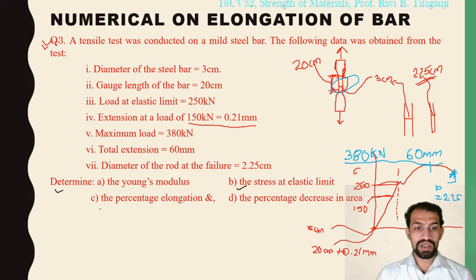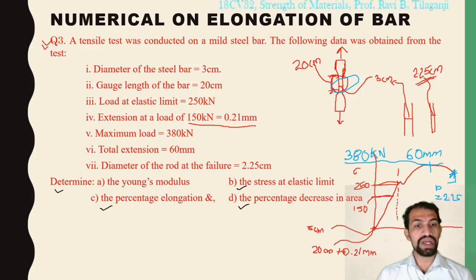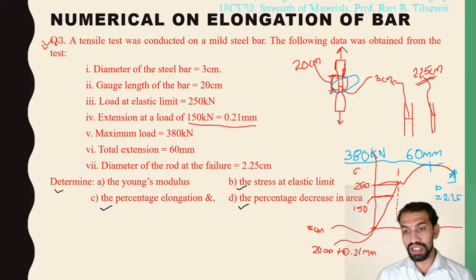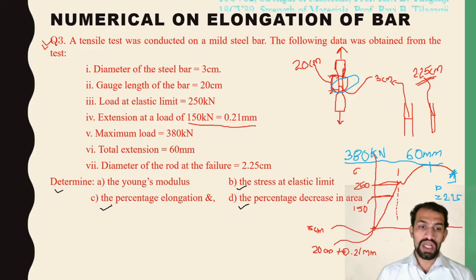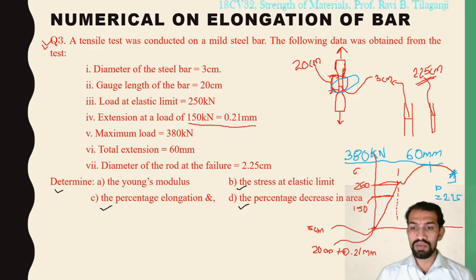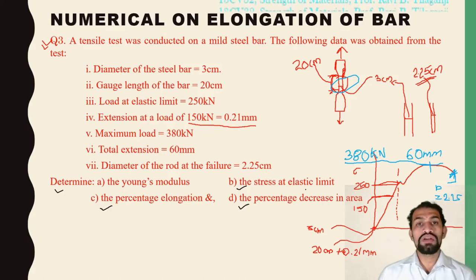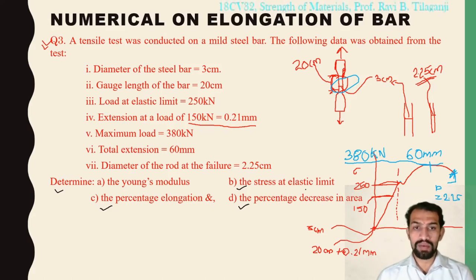Young's modulus E equals stress divided by strain. Stress equals load divided by area, calculated within the elastic limit. We also need to find the percentage elongation and the percentage decrease in area.